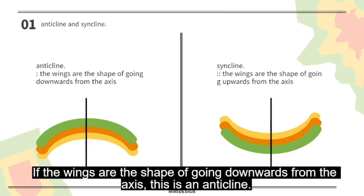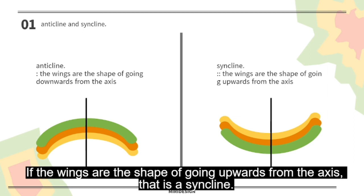If the wings are the shape of going downwards from the axis, this is an anticline. If the wings are the shape of going upwards from the axis, this is a syncline.